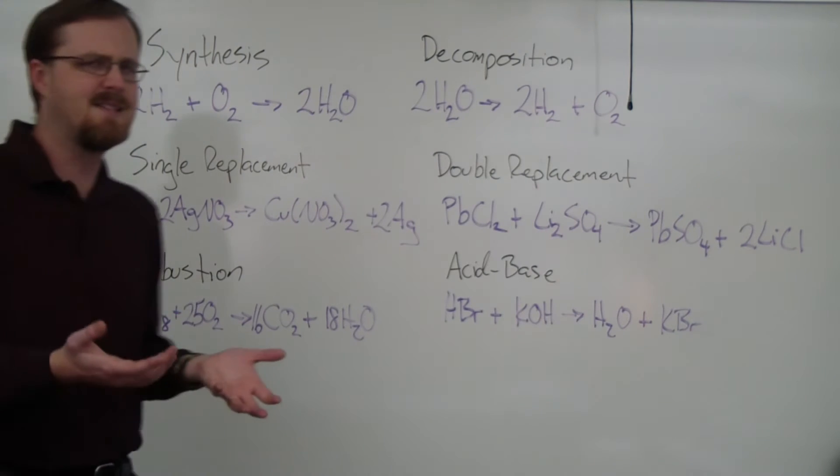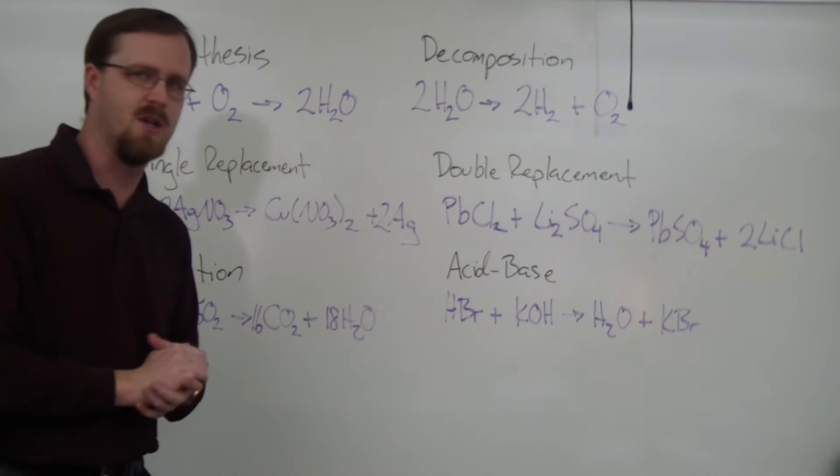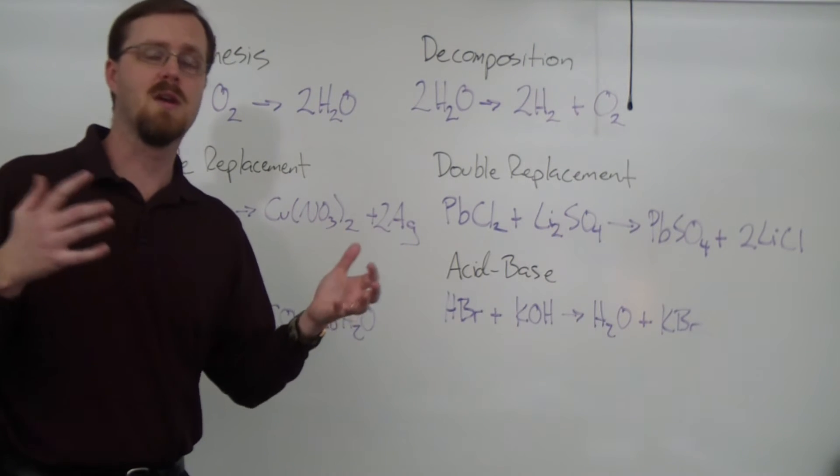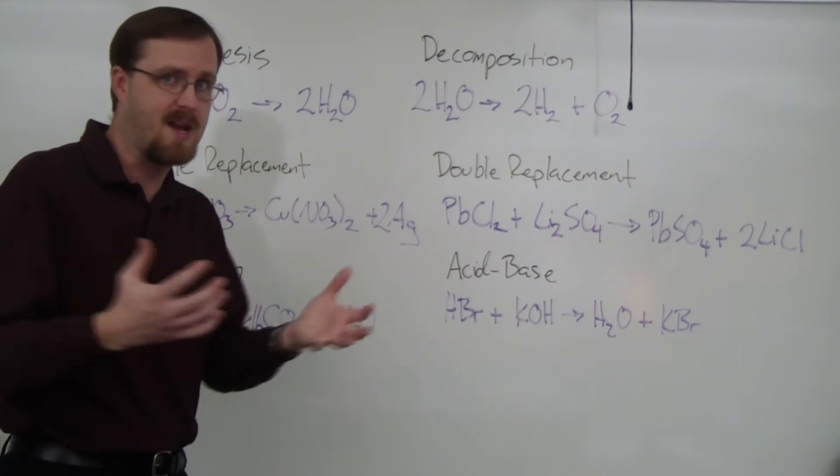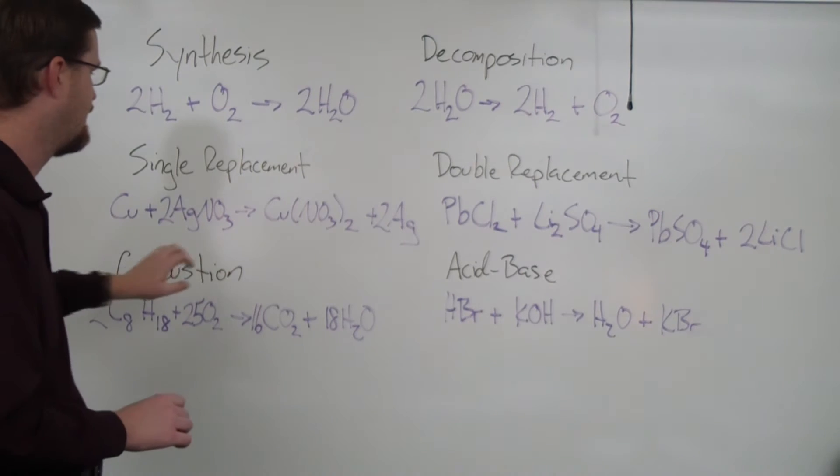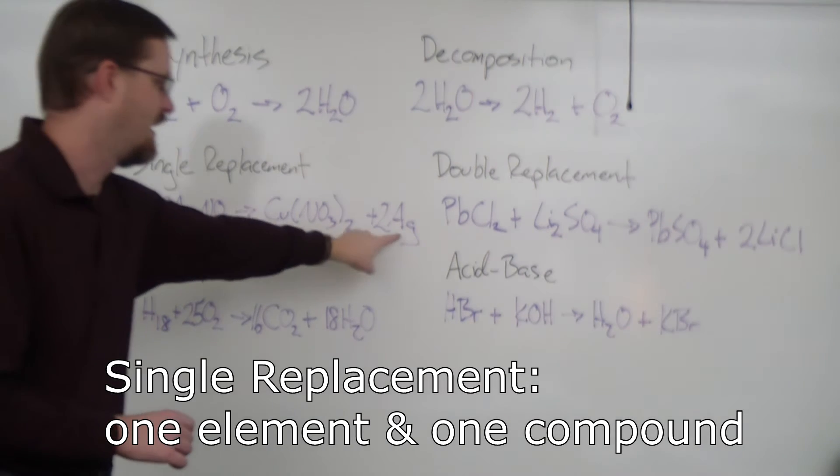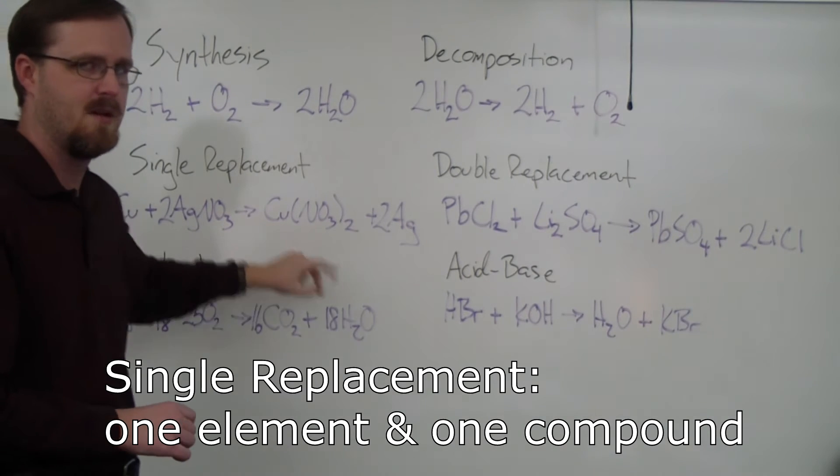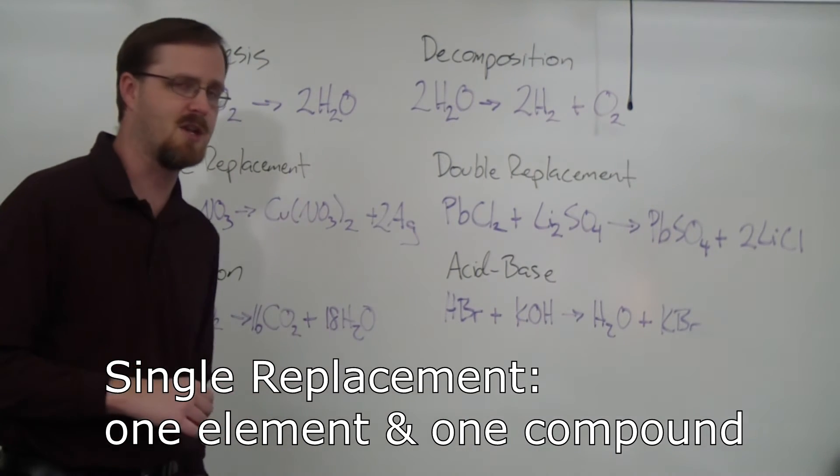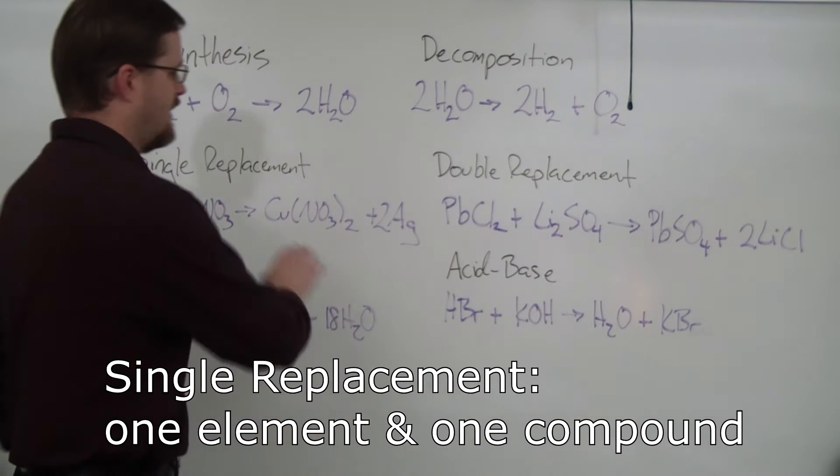Now what is the identifying characteristic of this? Well you could try to analyze the entire equation and try to find out what one thing is being replaced, or you can identify the pattern and recognize that a single replacement equation is made up of an element and a compound. So the identifying characteristic of a single replacement reaction is that there is one element and one compound on both sides of that arrow.